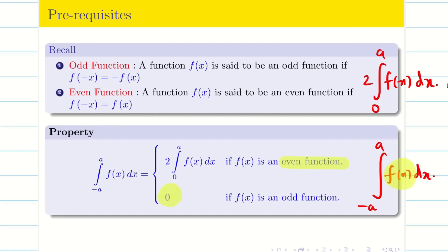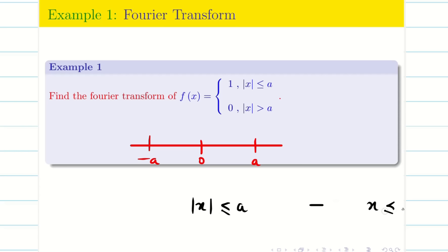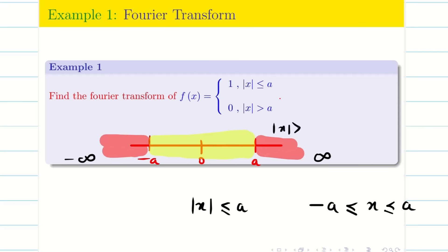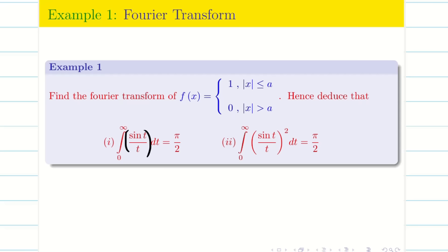Let us go into a simple problem. Find the Fourier transform of f(x) = 1 for |x| ≤ a, and 0 for |x| > a. Remember: |x| ≤ a means x lies between −a and +a. The region |x| > a covers x from a to +∞ and from −∞ to −a. We then need to find two deductions, and we will solve them one by one in a systematic way.